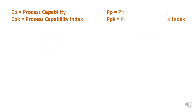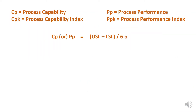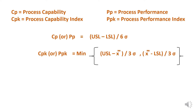First we will understand the formula of Cp and Cpk, Pp and Ppk. Cp and Pp use a similar formula: USL minus LSL divided by 6 sigma — but the sigma calculation for Cp and Pp will differ. Similarly for Cpk and Ppk, the formula is the minimum value of either USL minus X-double-bar divided by 3 sigma, or X-double-bar minus LSL divided by 3 sigma. Again, the sigma calculation for Cpk and Ppk will differ.